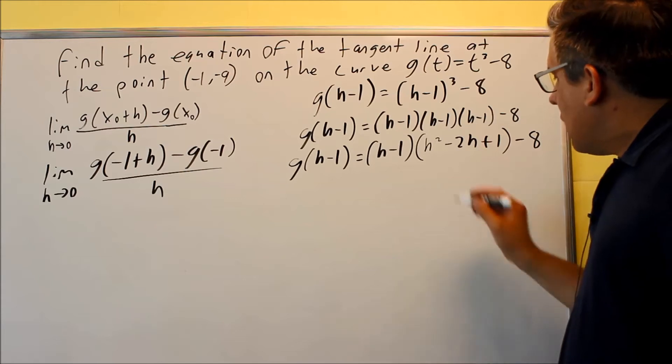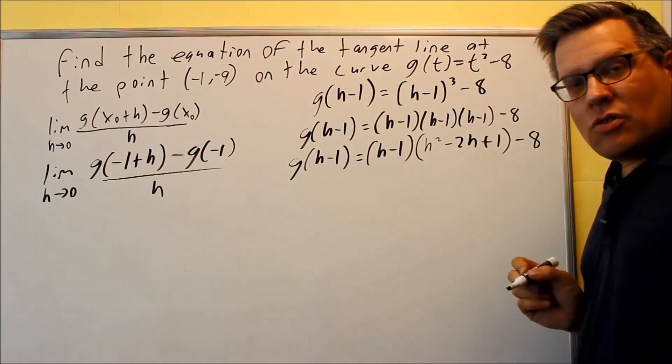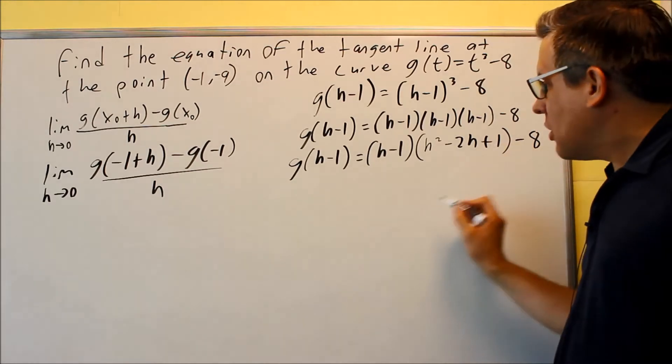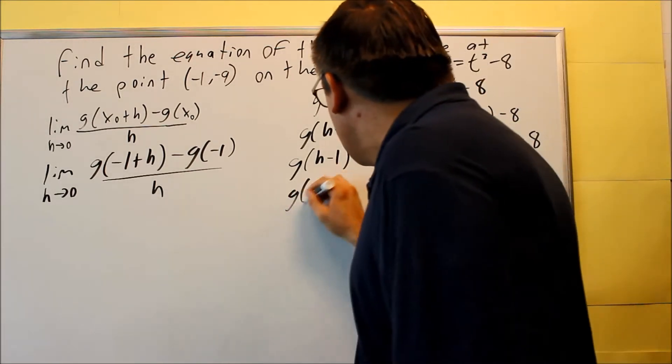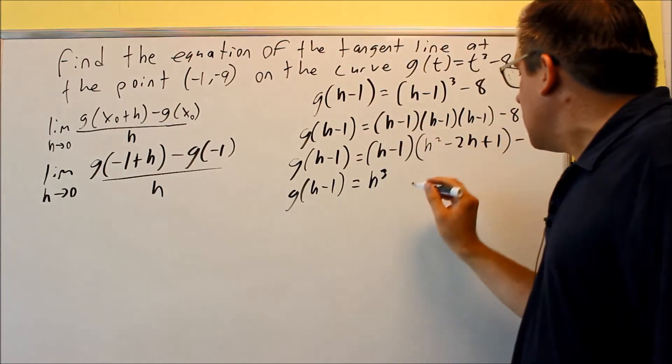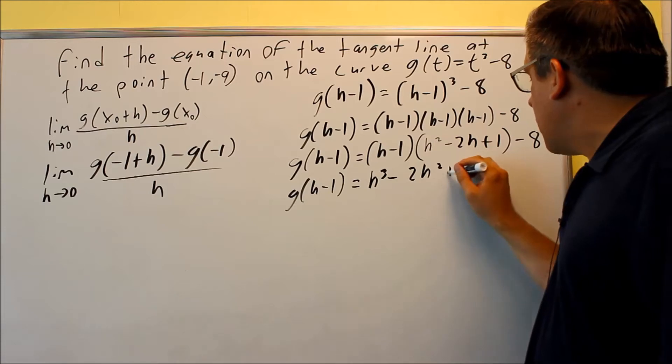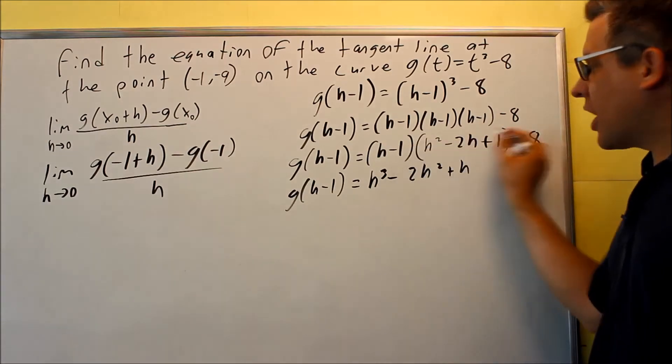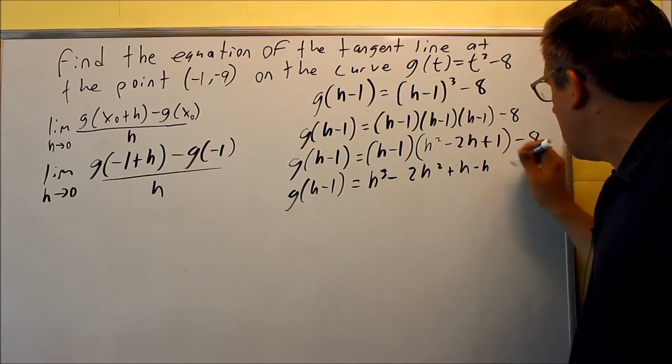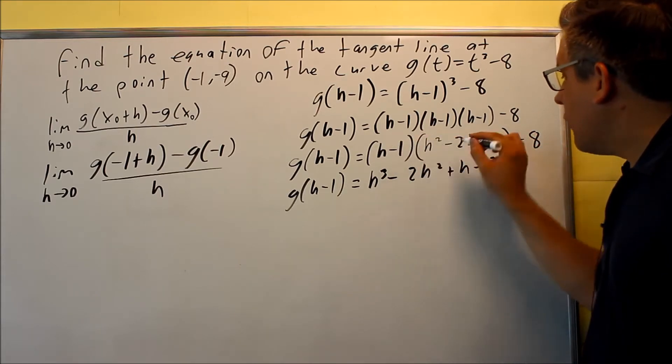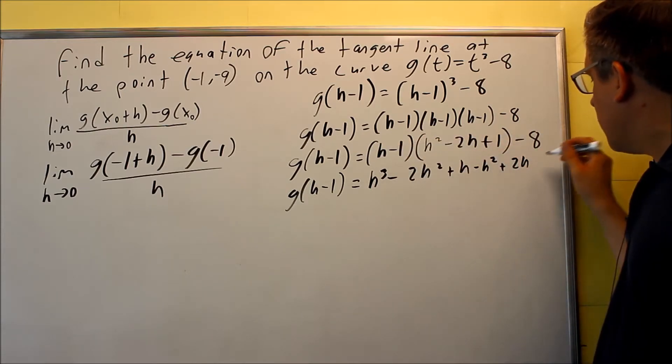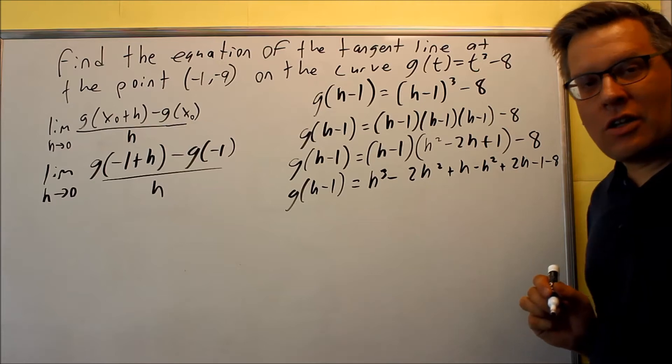Next, we're going to multiply these two together. To do so, we're going to take h times everything inside the parenthesis, and then negative 1 times everything inside the parenthesis. So when we do that, we're going to get h cubed minus 2h squared plus h, and then I'm going to do negative 1 times everything. So I'm going to get negative h squared, negative negative is plus 2h, negative and positive is a minus 1, and then we also have a minus 8 on the end.